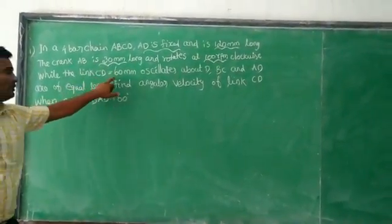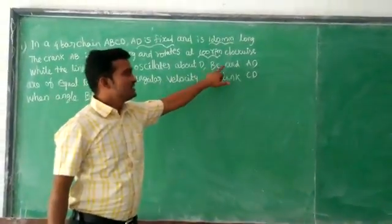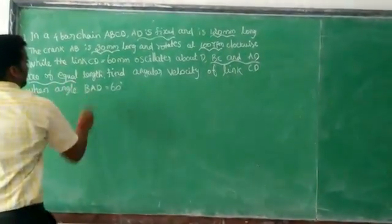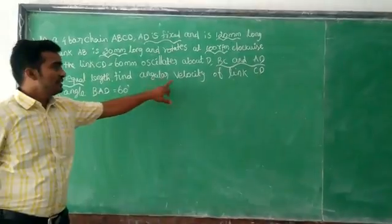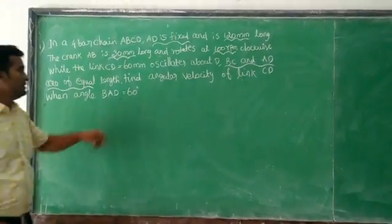While the link CD equals 60 mm oscillates about D, BC and AD is equivalent. So find the angular velocity of the link CD when angle BAD equals 60 degrees.